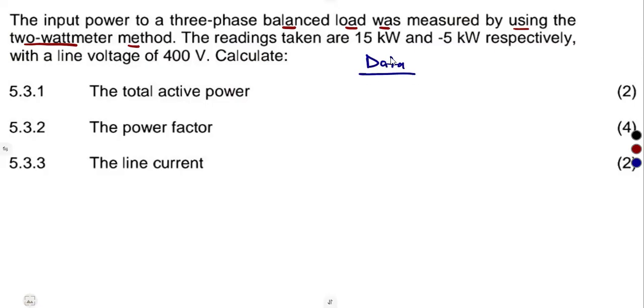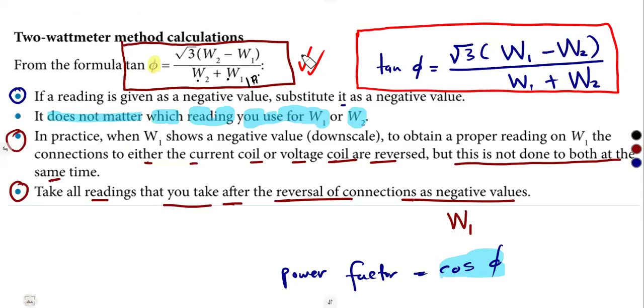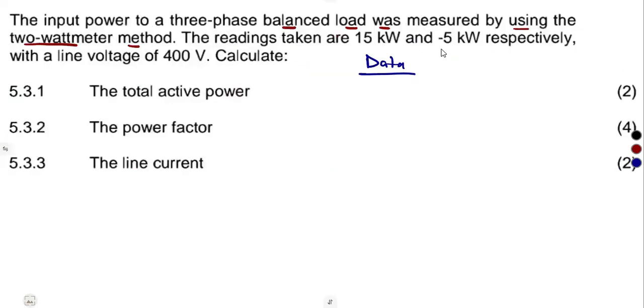The formulas, as you can see, we've got one formula which can be written in another way. It does not matter which one represents the reading of wattmeter one, which one is for wattmeter two, but take your values as they are. I'm just going to take this one as my wattmeter one, that's 15 kilowatts, then the second one as wattmeter two, which is negative 5 kilowatts.